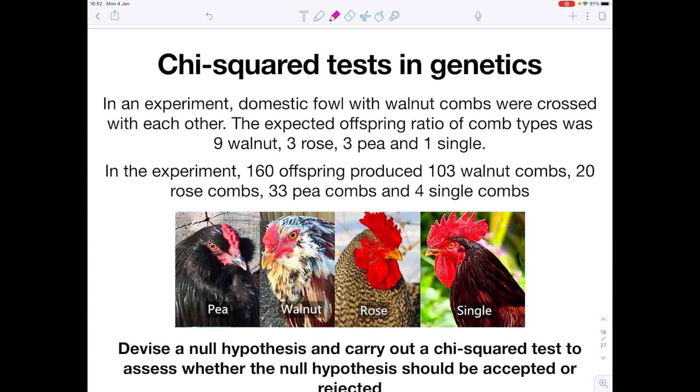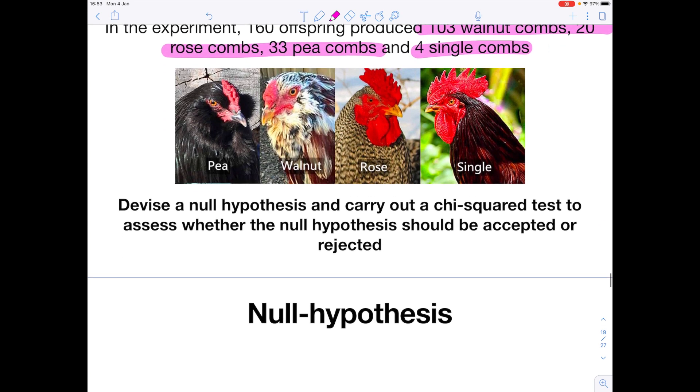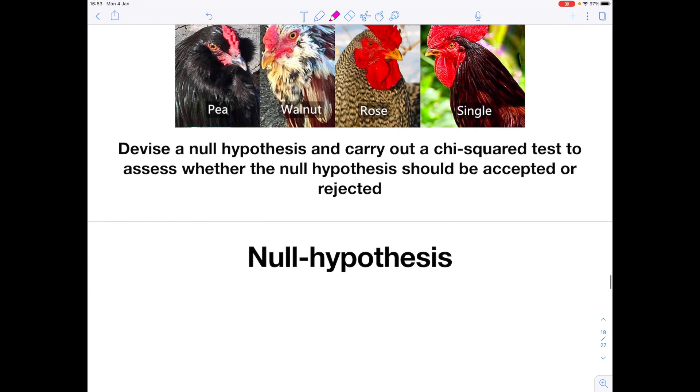So let's look at an example. Chi-squared tests in genetics. In an experiment, domestic fowl with walnut combs were crossed with each other. The expected offspring ratio of comb types was 9 walnut, 3 rose, 3 pea, and 1 single. In the experiment, 160 offspring produced 103 walnut combs, 20 rose combs, 33 pea combs, and 4 single combs. Devise a null hypothesis and carry out a chi-squared test to assess whether the null hypothesis should be accepted or rejected.